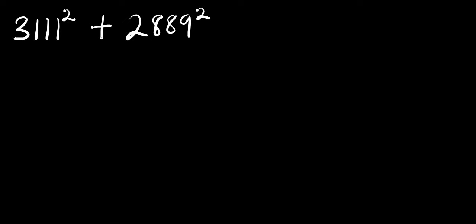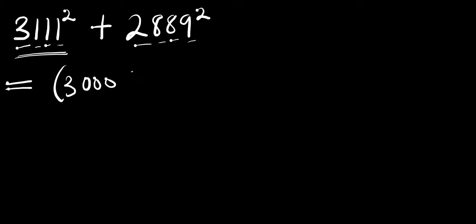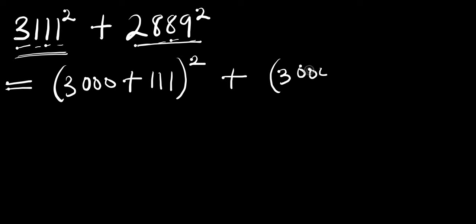Hello, in this video we are going to evaluate this without making use of a calculator. We have 3111 power 2 plus 2889 power 2. What we are going to do is rewrite this as 3000 plus 111 raised to the power of 2, plus 3000 minus 111 raised to the power of 2.